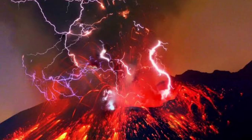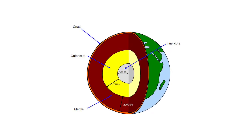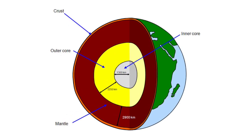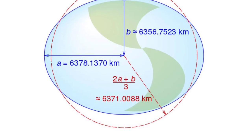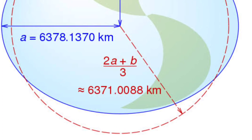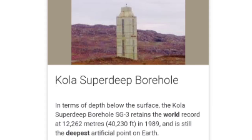The widespread damage caused by natural calamities — loss of life, loss of property — makes us think what's present inside the Earth's surface. Today's topic is Earth's interior. The Earth's interior is divided into three different layers: crust, mantle, and core. The average radius of the Earth is 6371 kilometers.